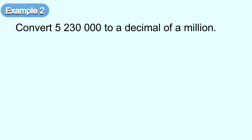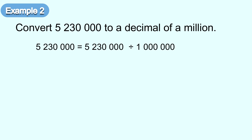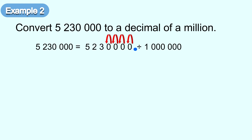Example two: convert 5 million 230,000 to a decimal of a million. To convert, divide by 1 million. 1 million has 6 zeros, so move the decimal point 6 times to the left. 5,230,000 — the decimal point is at the back. Move it 6 times to the left. The answer will be 5.23 million.